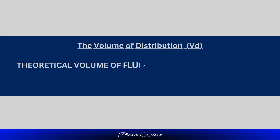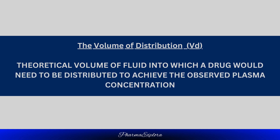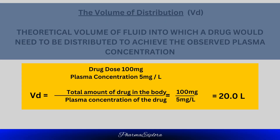The volume of distribution represents the theoretical volume of fluid into which a drug would need to be distributed to achieve the observed plasma concentration. For example, if we administer 100 mg of a drug and measure a plasma concentration of 5 mg per liter at time x, then the volume of distribution at time x would be 20 liters.